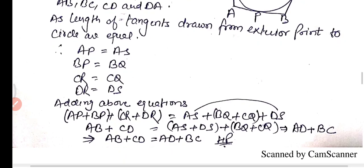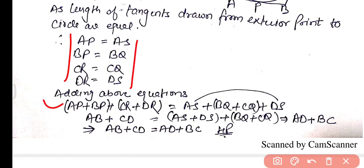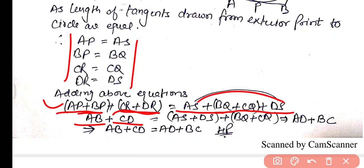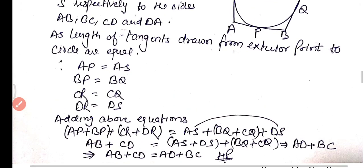Adding all equations: AP plus BP plus CR plus DR equals AS plus BQ plus CQ plus DS. AP plus BP equals AB, CR plus DR equals CD, AS plus DS equals AD, and BQ plus CQ equals BC. Therefore AB plus CD equals AD plus BC — the sum of opposite sides are equal. Hence proved: sum of opposite sides of a quadrilateral circumscribing a circle are equal.